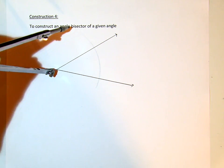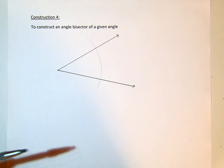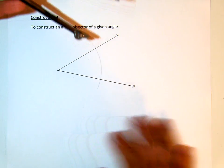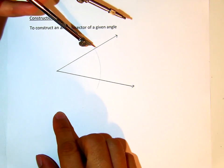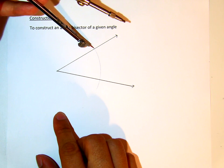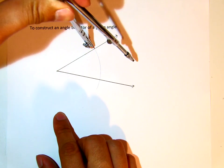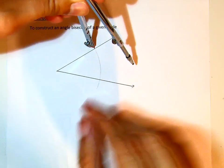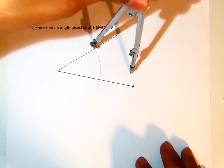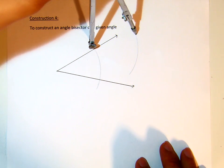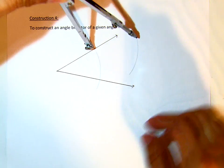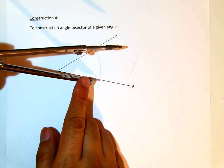And then I will pull my pivot and put it on both of the intersection points of the arc and the legs. Then I swipe it here, somewhere in the middle of this angle, and swipe it here.